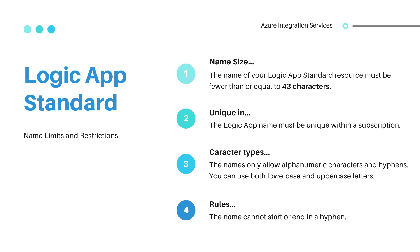The names only allow alphanumeric characters and hyphens. The Logic App name must be unique within a subscription. You can use both lowercase and uppercase letters. The name cannot start or end with a hyphen.